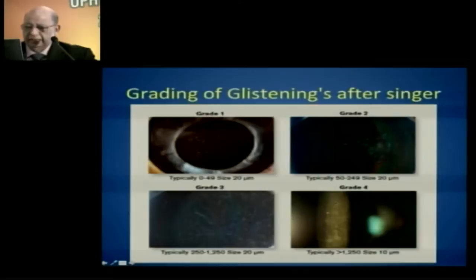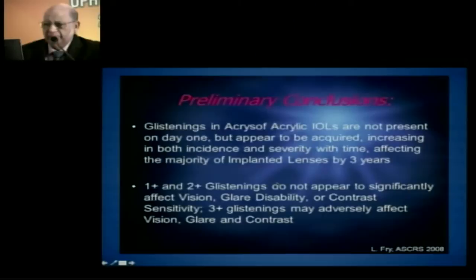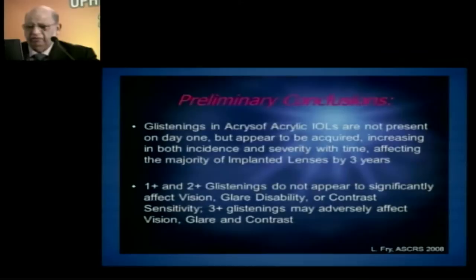The grading of glistening, after Singer who did a great deal of work on it, goes from Grade 1 — hardly any — to Grade 2, Grade 3 at almost 20 microns in size, up to Grade 4 where it becomes extremely obvious. Though glistenings don't seem present at day one, they progressively increase and cause glare and contrast sensitivity problems.